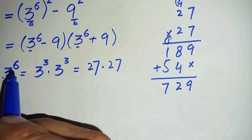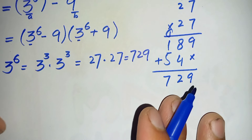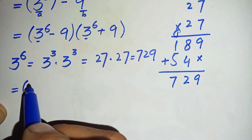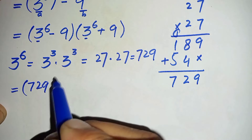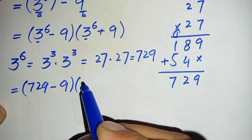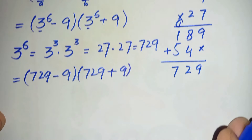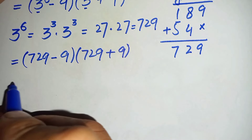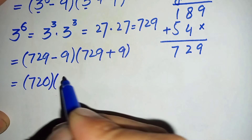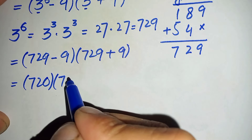Now we will replace 3 raised to power 6 with 729 in the equation. So the expression becomes: 729 minus 9, times 729 plus 9. We now add and subtract these numbers: 729 minus 9 is 720, and 729 plus 9 is 738.